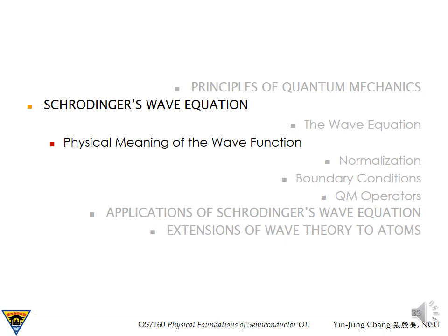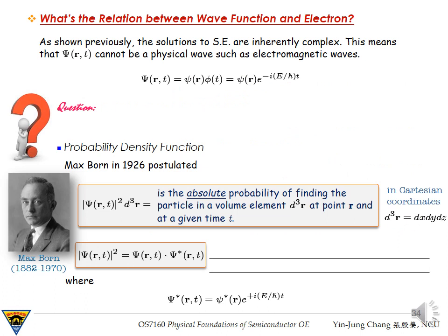Physical meaning of the wave function. So up to this point we know that with the assumption of time-invariant potential energy and using the separation of variable techniques, the Schrödinger equation can be separated into two ordinary differential equations, the time-dependent portion and the time-independent portion.